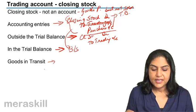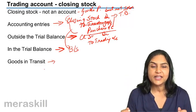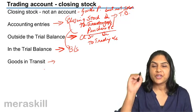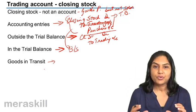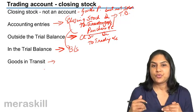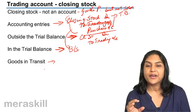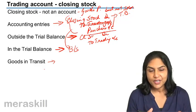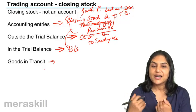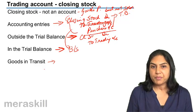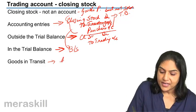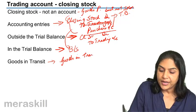Goods in transit: when we physically count the closing stock, suppose we expect 1000 units but find only 800 units — 200 units are actually in transit. We have recorded them as purchased, but the goods have not yet arrived and are not yet on the premises. If they were on the premises, they would be part of the closing stock. In such a case, we pass an entry: Goods in Transit Account debit to Trading Account, since it is already included in purchases.